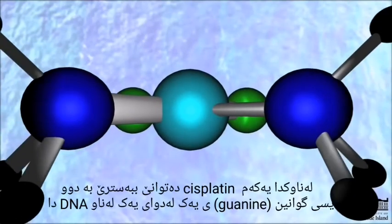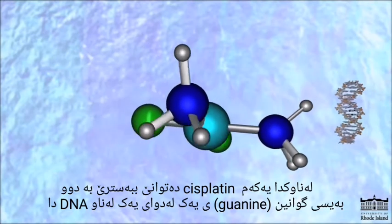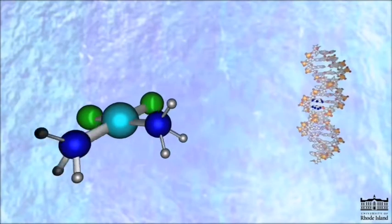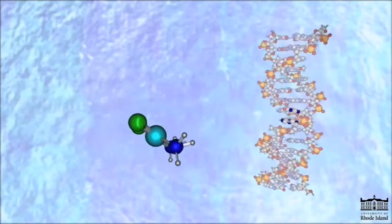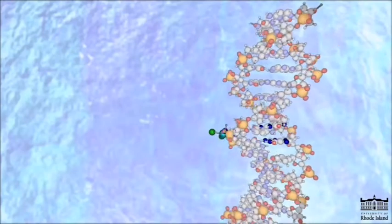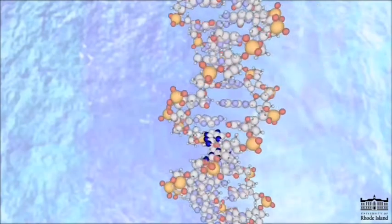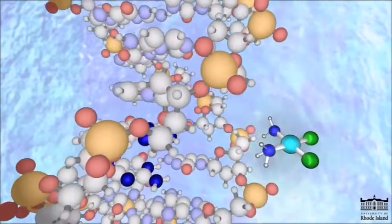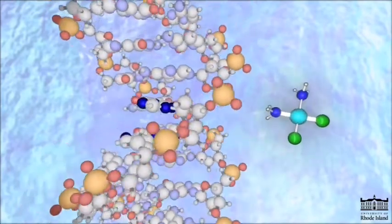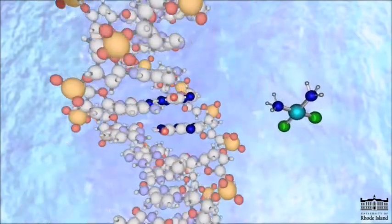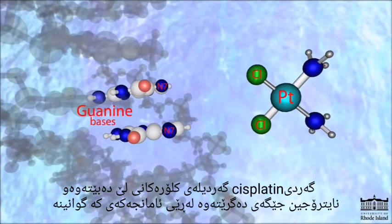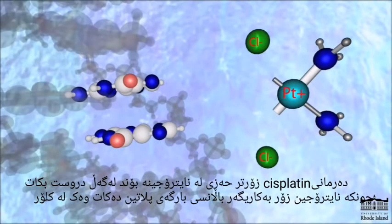Once in the nucleus, cisplatin can form an adduct with two consecutive guanine bases within a strand of DNA. The molecule loses its chlorine atoms in exchange for the nitrogen atoms of the target guanines. Cisplatin can bond more tightly with nitrogen because nitrogen balances the platinum charge more effectively than chlorine.